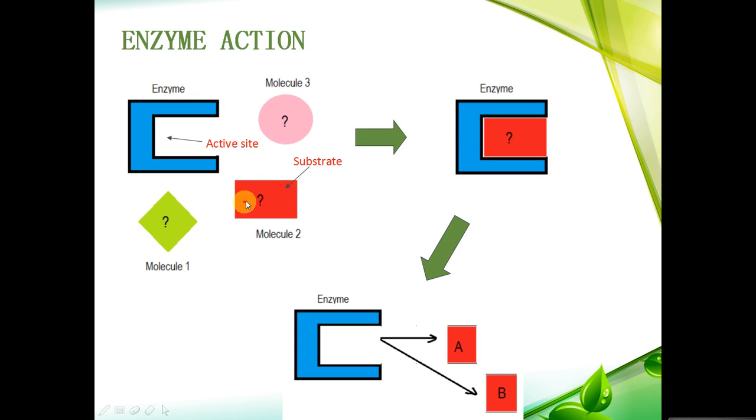When the substrate enters the active site and forms this here, we call that the enzyme substrate complex, which is pretty much literally a complex formed between an enzyme and a substrate. And at the very end, when we get the products of the reaction, in this case A and B, we simply call that the products.